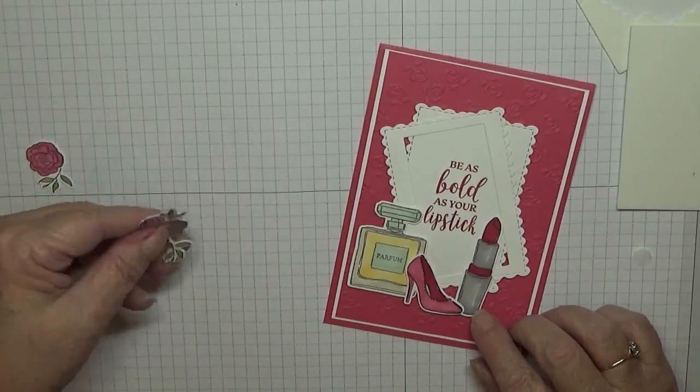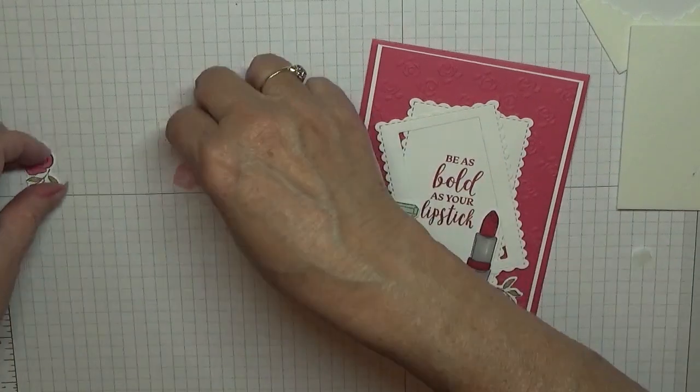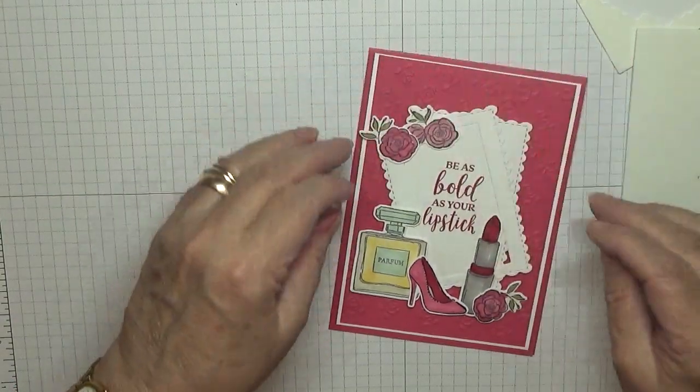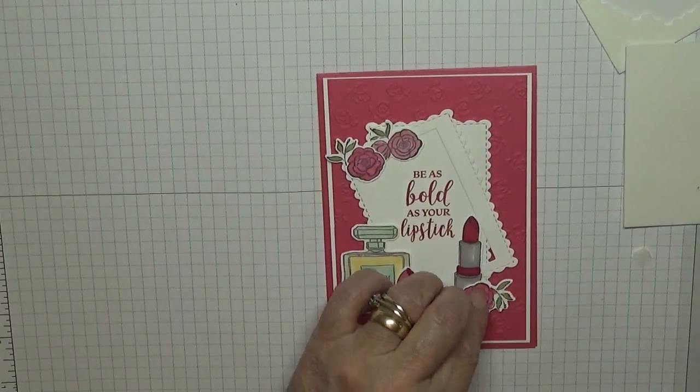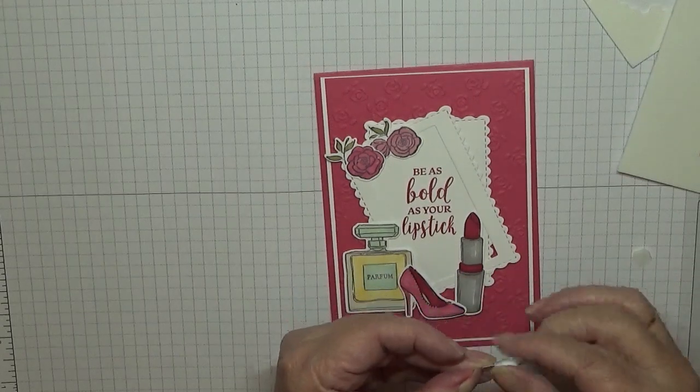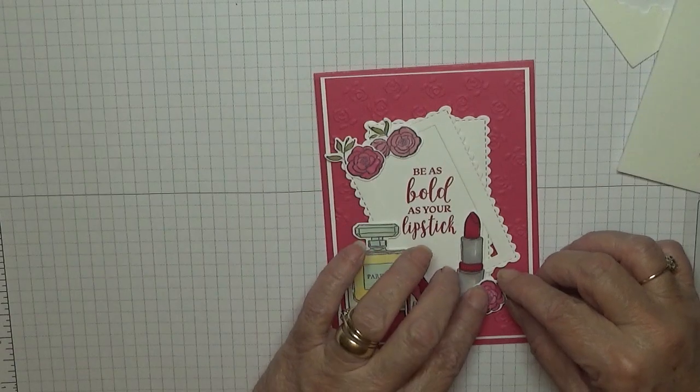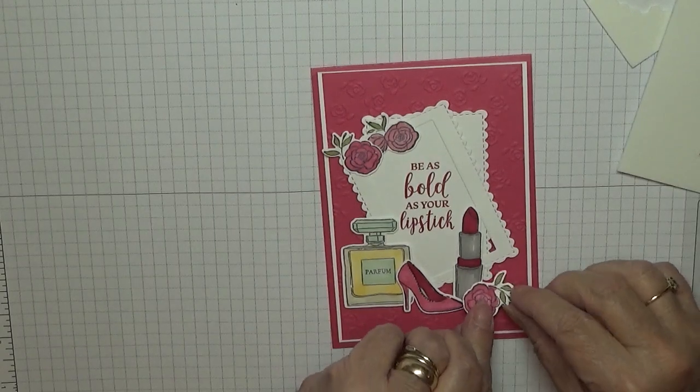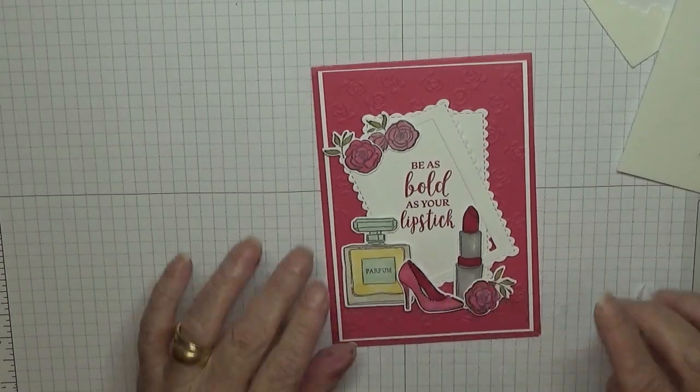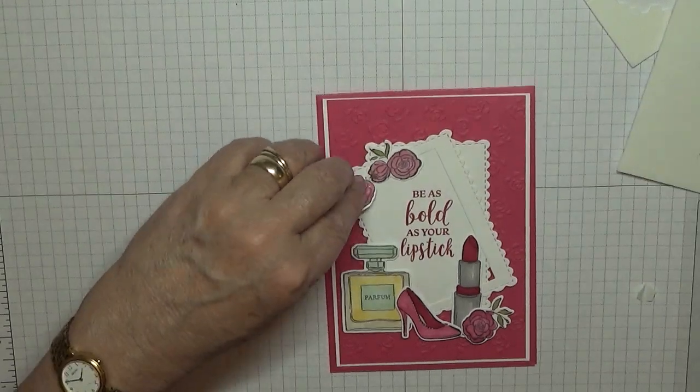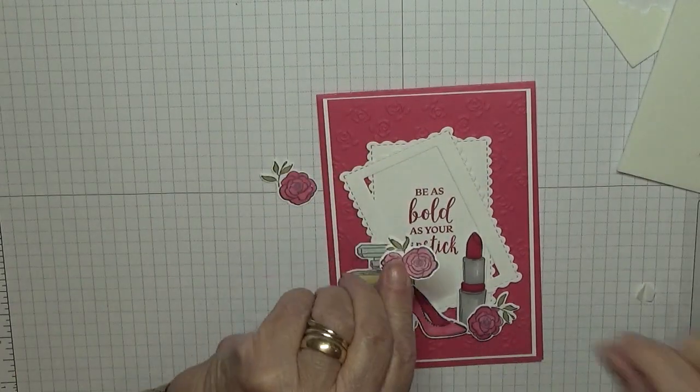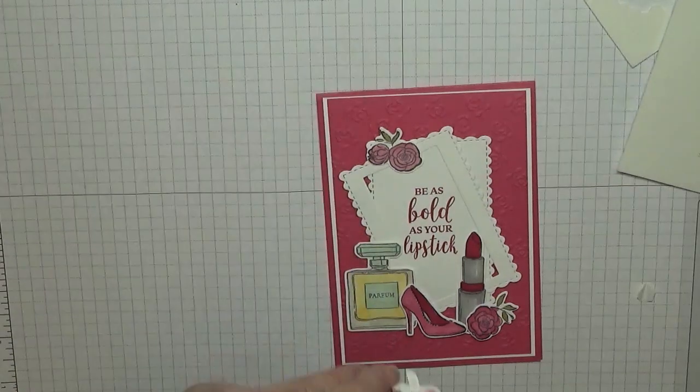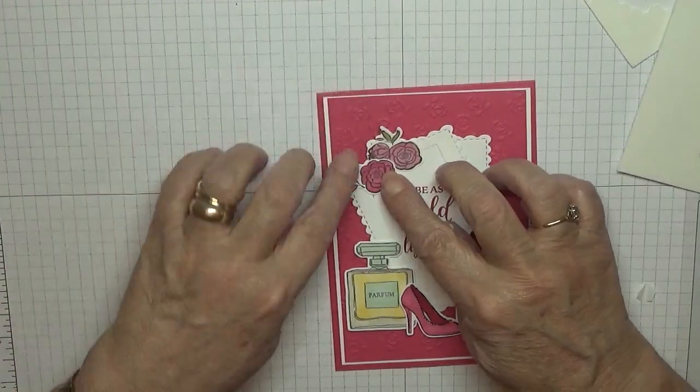And then we just need to put these flowers around so I am going to do it like that. So this one needs a dimensional on that side. Place a bit of glue and where it's going to touch the other, where it's leaning against next. And then these two just get glued down. Like that and there is our card.